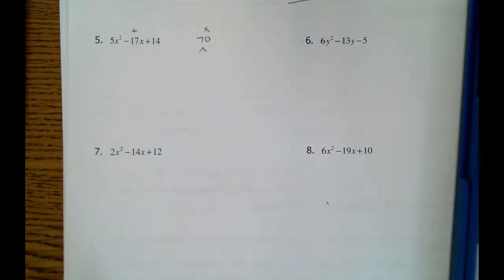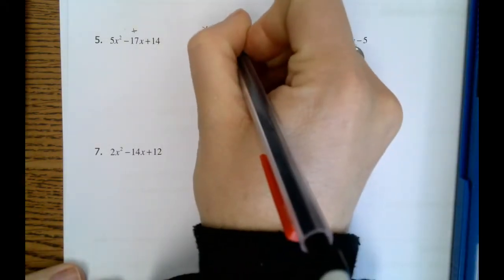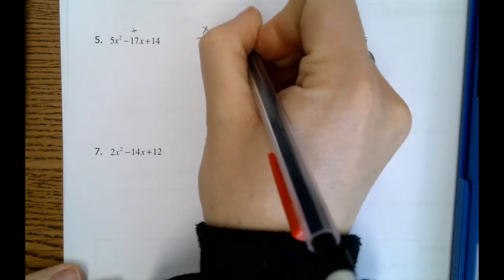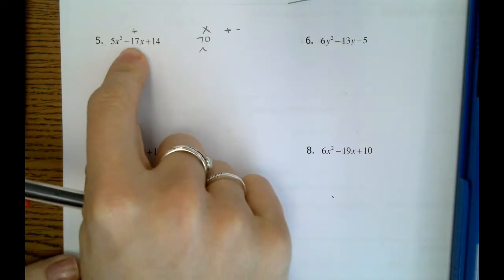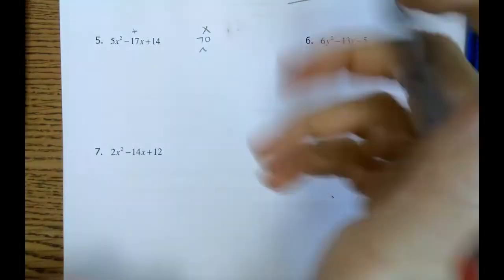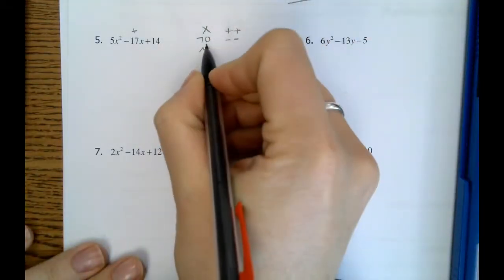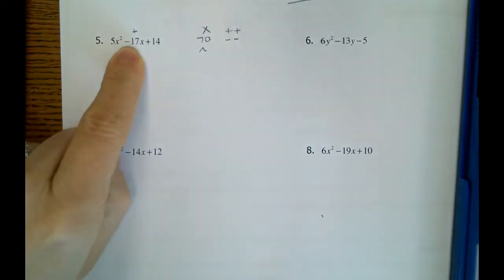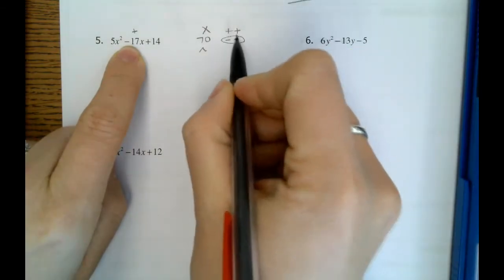Sometimes when you get those bigger numbers, it might not be a bad idea to grab a calculator. So we need to have either two positives to get to 70 or two negatives to get to 70. However, since we're trying to add to a negative number, we're going to have to do two negatives.